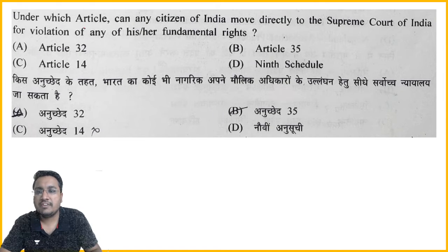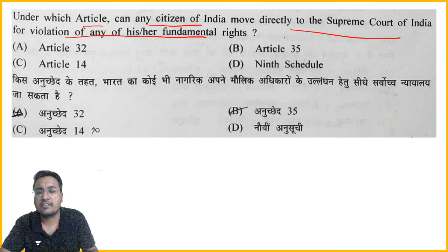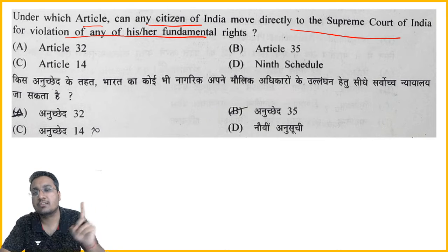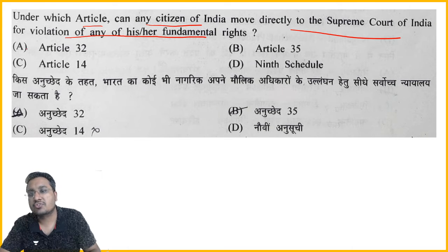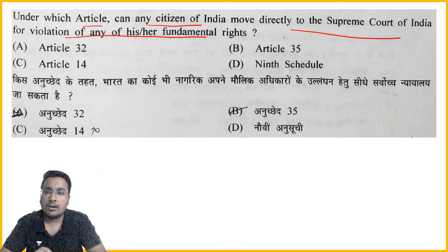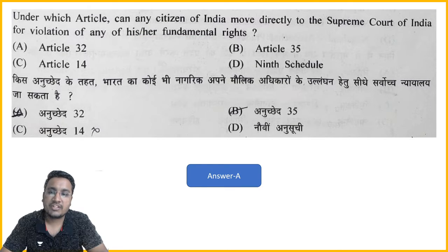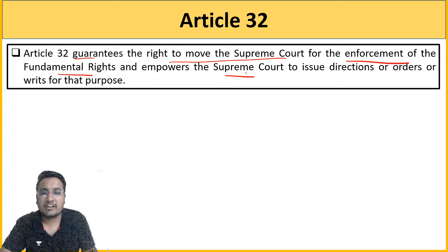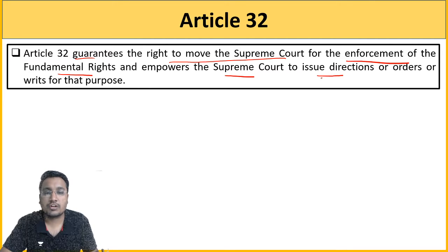Next question: Under which article can any citizen of India move directly to the Supreme Court of India for violation of any fundamental right? That is a very simple question — the answer is Option A, Article 32. Article 32 guarantees the right to move the Supreme Court for enforcement of fundamental rights, and gives the Supreme Court the power to issue directions, orders, or writs to the government if it finds that a fundamental right has actually been violated.